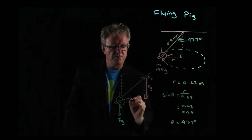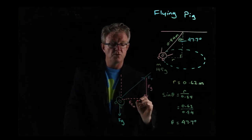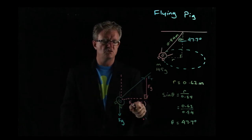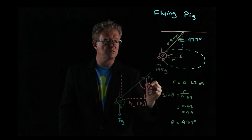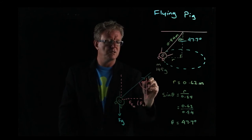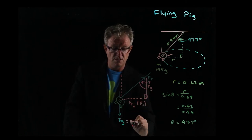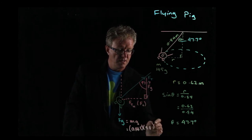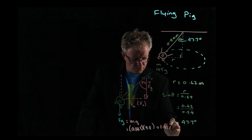We have the horizontal component Ft,x, which equals the centripetal force because it's the net force causing the object to rotate. We know the angle is 47.7 degrees. To find Fg, we use Fg equals mg. The mass was 0.145 times 9.8, which gives us 1.42 newtons.